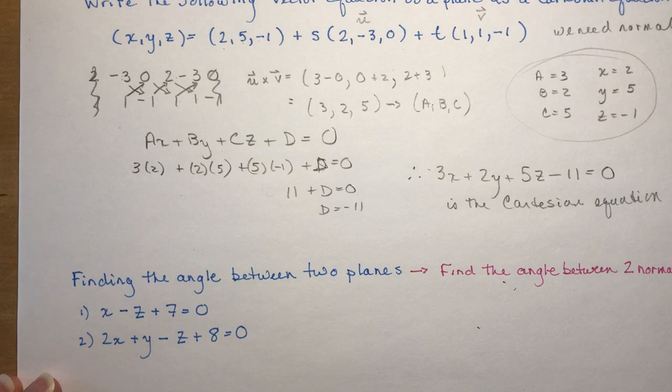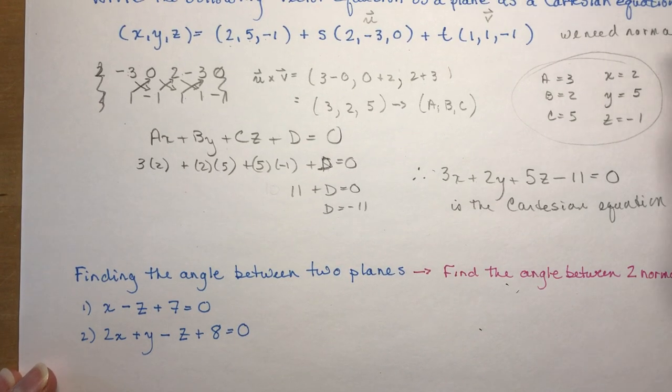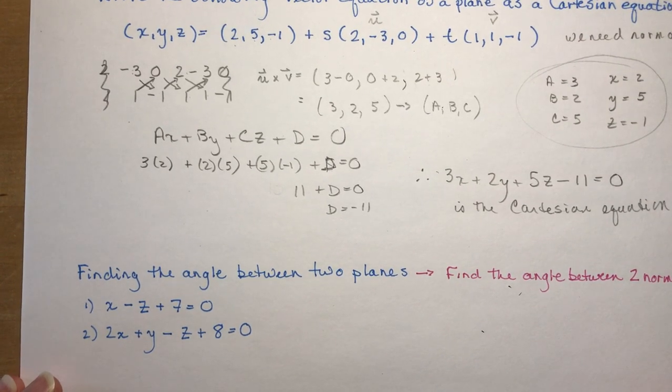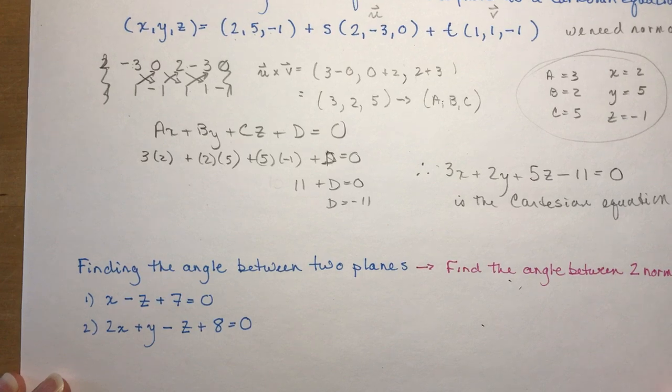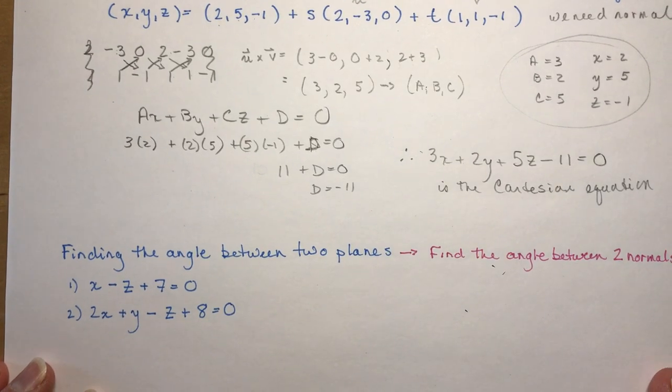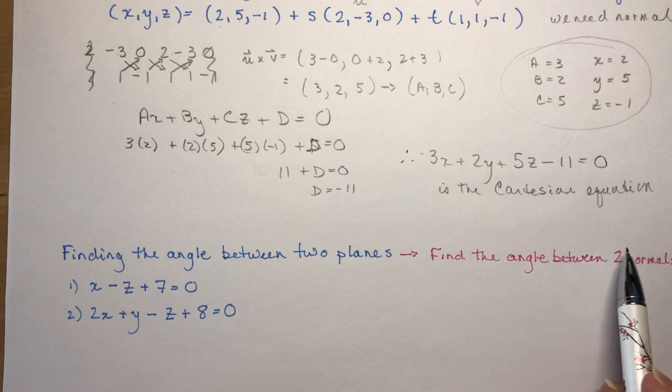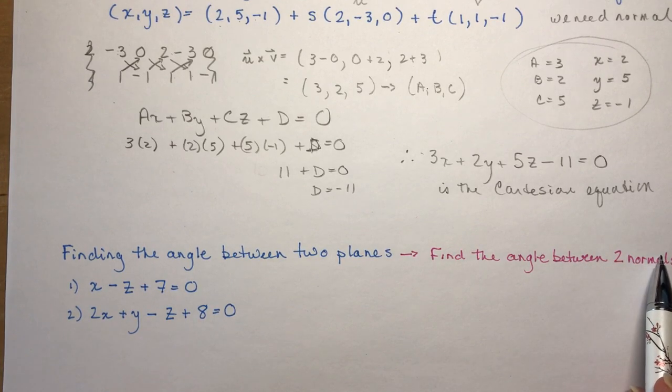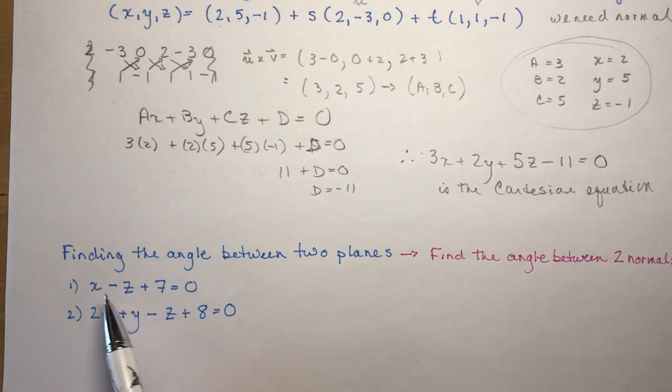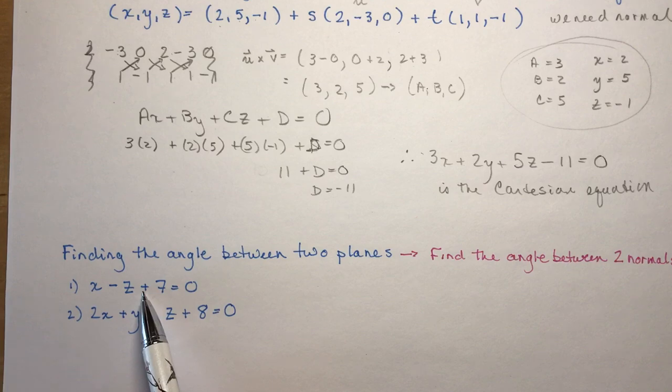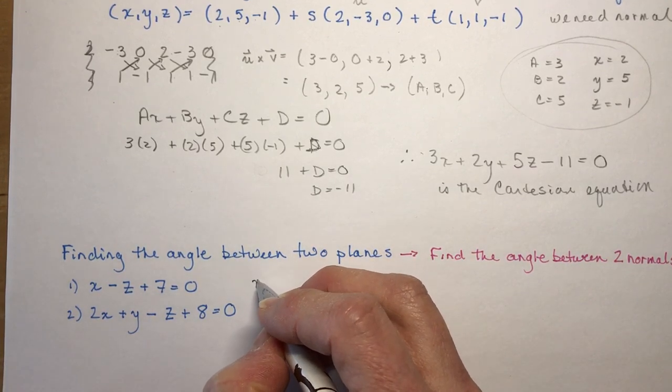So the last little bag of tricks you have to know how to do is how to find the angle between two planes. So if you're going to find the angle between two planes, you need to find the angle between two normals. So you need to know what the normals are of the planes. Now, when it's in this format, the normals are really easy, right? What's the normal for this plane?